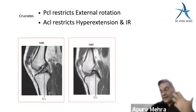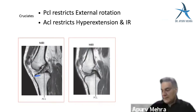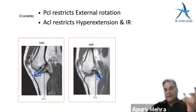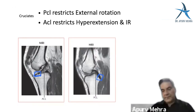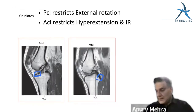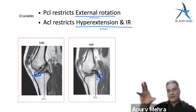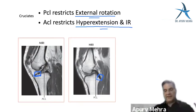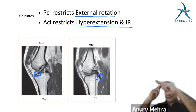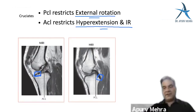On a sagittal knee MRI, the ACL inserts entirely into the tibia anteriorly; the PCL is posterior in the tibia. In the femur, both originate from the posterior area. The ACL restricts hyperextension and internal rotation — very commonly asked. The PCL restricts external rotation. ACL and PCL form a crisscross — that's why they're called cruciate ligaments.